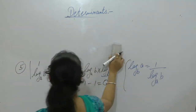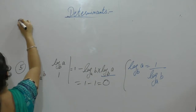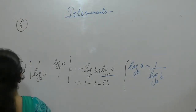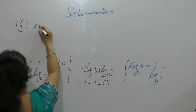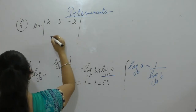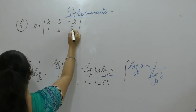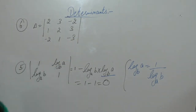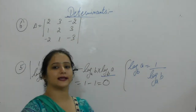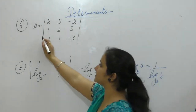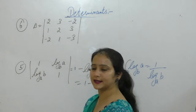Next: evaluate the determinant with elements 2, 3, -2 / 1, 2, 3 / -2, 1, 2 — by expanding it along the second row. We have to solve this determinant by expanding along the second row.